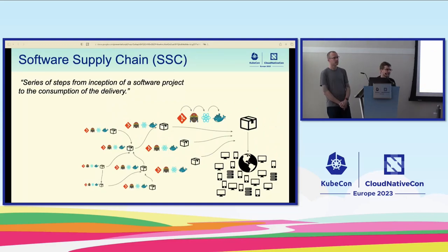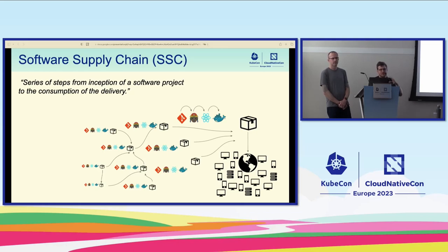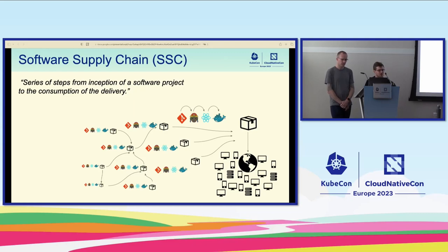You'll hear many different definitions of the software supply chain. One definition I like is that the software supply chain is the series of steps from inception of a software project to the delivery of the resulting product. It's a very generic definition. What the software supply chain also is, is an attractive target for attackers — for one simple reason: attackers can maximize their impact, as a single compromise affects millions of end users.